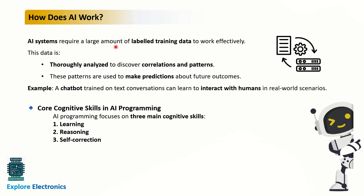How does AI work? AI systems require large amounts of data — specifically labeled training data — to work effectively. This data is thoroughly analyzed to discover correlations and patterns, and these patterns are used to make predictions about future outcomes. For example, a chatbot trained on text conversations can learn to interact with humans in real-world scenarios. There are three core cognitive skills in AI programming: learning, reasoning, and self-correction.